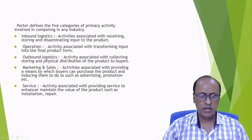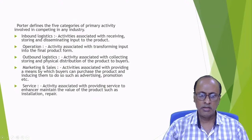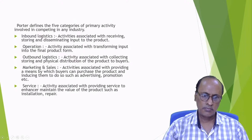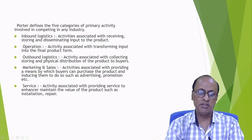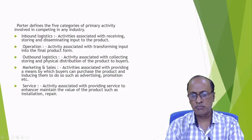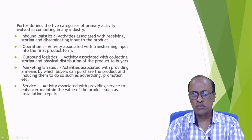Porter defines five categories of primary activity in competing in any industry. The first is inbound logistics — activities associated with receiving, storing, and disseminating inputs to the product. Inbound logistics means the logistics which comes inside to the organization: receiving raw materials, storing them, and disseminating them into the production process.